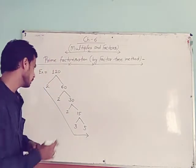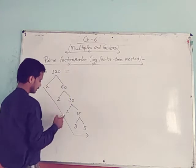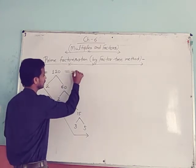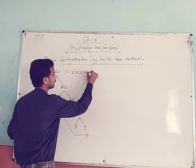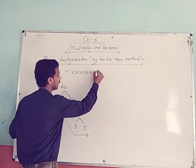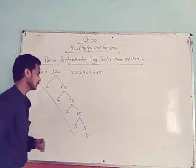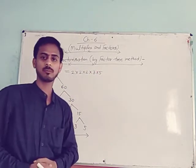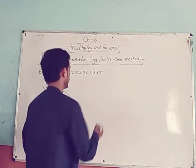So write here: 2 × 2 × 2 × 3 × 5. This is called the factor tree method.